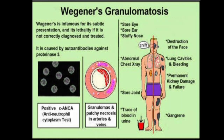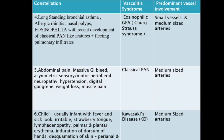The fourth constellation: long-standing asthma, allergic rhinitis, nasal polyps, eosinophilia, with recent development of classic PAN-like features plus fleeting pulmonary infiltrates. What is giving away is eosinophilia and long-standing asthma. This is EGPA — Eosinophilic Granulomatosis with Polyangiitis — also known as Churg-Strauss syndrome. Small vessels and medium size arteries are involved.